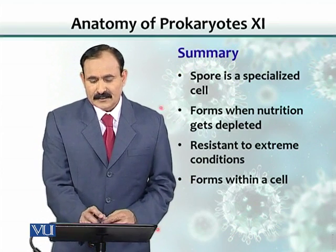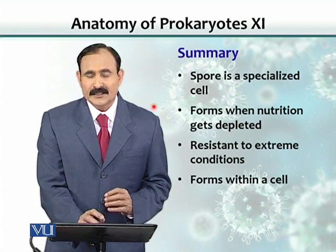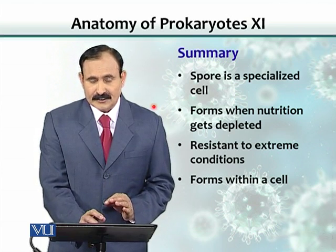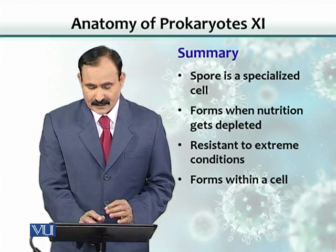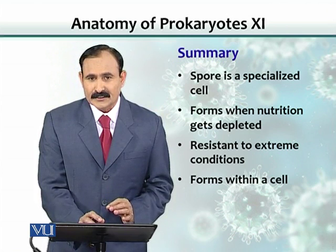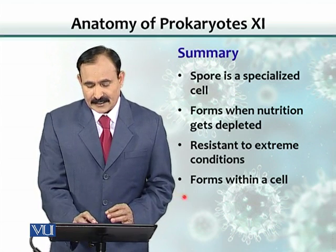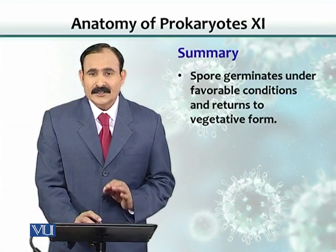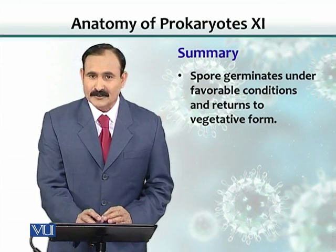In summary, a spore is a specialized cell that forms when there is scarcity of nutrients or when environmental conditions are not favorable for the bacteria. It is extremely resistant to conditions like temperature, toxic chemicals, and radiation, and it forms within the cell. When conditions become favorable for the bacterium to grow, it comes back to life.